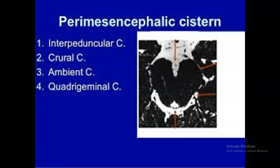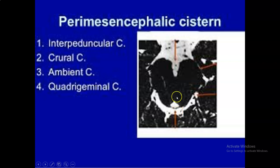The perimensencephalic cistern describes the subarachnoid spaces surrounding the midbrain. Going laterally from the midline interpeduncular cistern, you reach the crural cistern in front of the crus cerebri or cerebral peduncle, then the ambient cistern lateral to the midbrain, and posteriorly the quadrigeminal cistern. The single anterior cistern is the interpeduncular; the single posterior is the quadrigeminal; and the two paired cisterns on either side are the crural and the ambient — together called the perimensencephalic cistern.